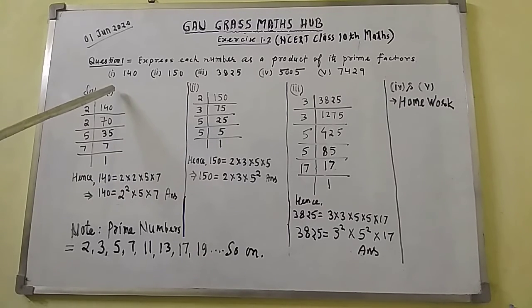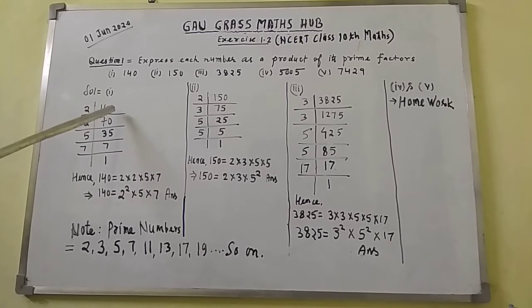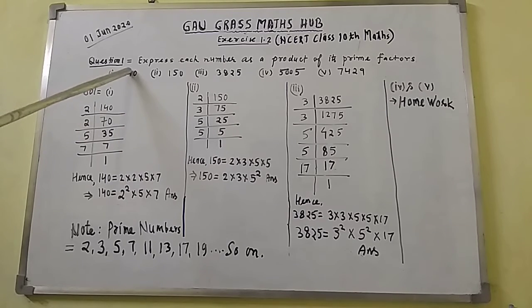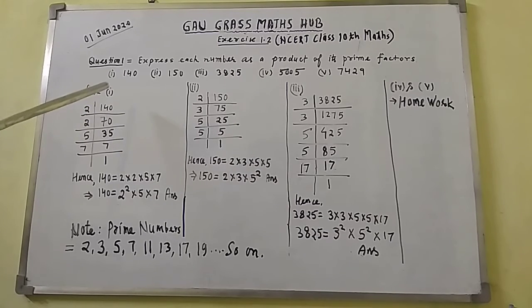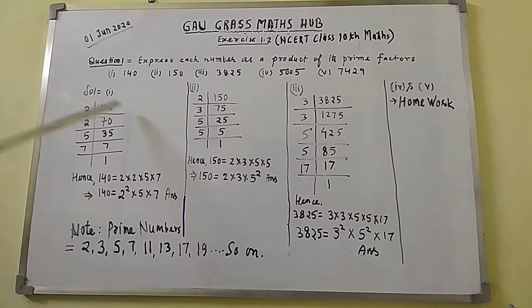For Roman (i), write down the number 140. After that, make a division table like this — draw one vertical line and a horizontal line.